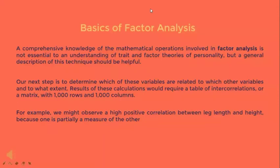Now let's discuss the basics of factor analysis. To use factor analysis, one begins by making specific observations of many individuals. These observations are then quantified — for example, height measured in inches, weight in pounds, aptitude in test scores, job performance per rating scales, and so on. Assume we have 1,000 such measures on 5,000 people. Our next step is to determine which variables are related to which other variables and to what extent by calculating the correlation coefficient between each variable and each of the other 999 scores.